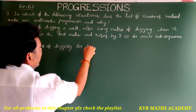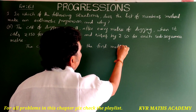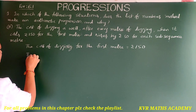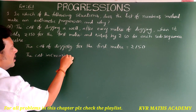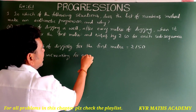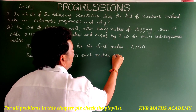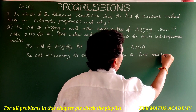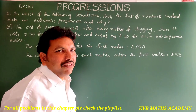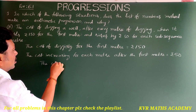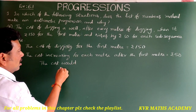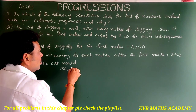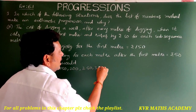The cost of digging for the first meter is rupees 150. It increases by rupees 50 for each subsequent meter. So the costs would be: 150, 150 + 50 = 200, then 250, then 300, and so on.